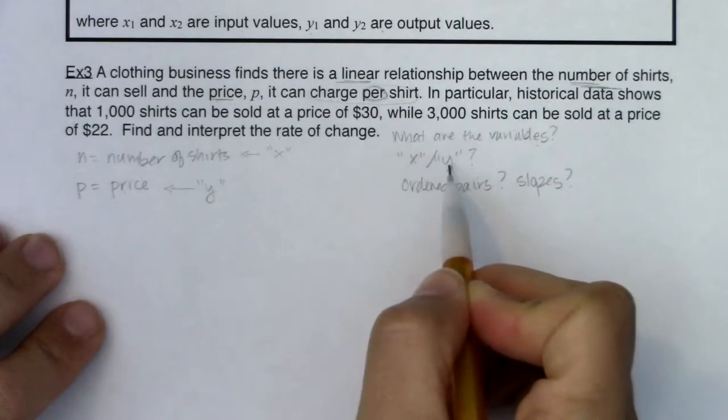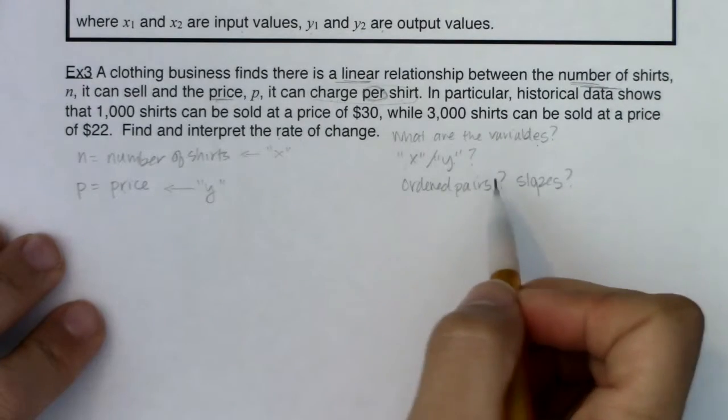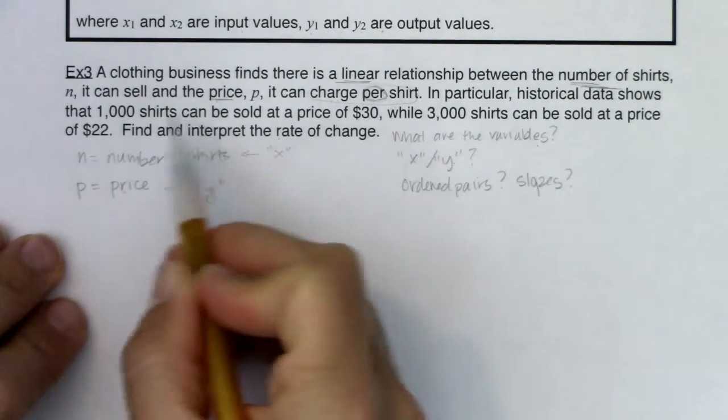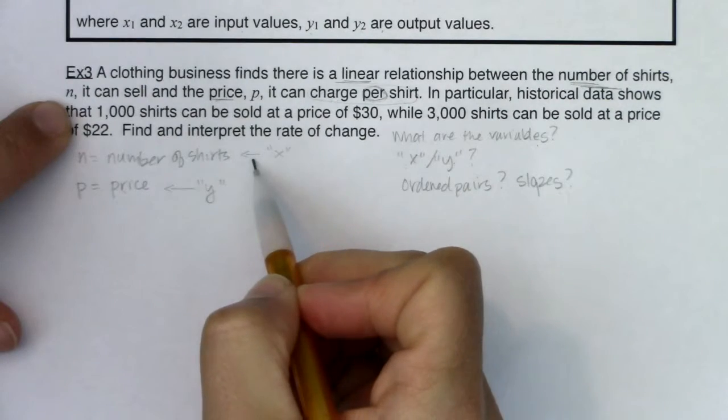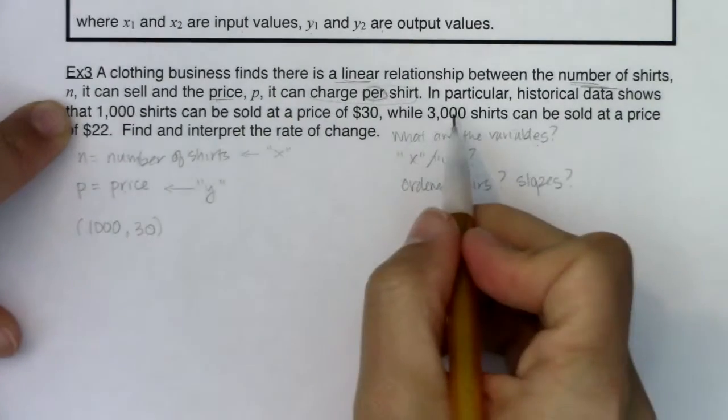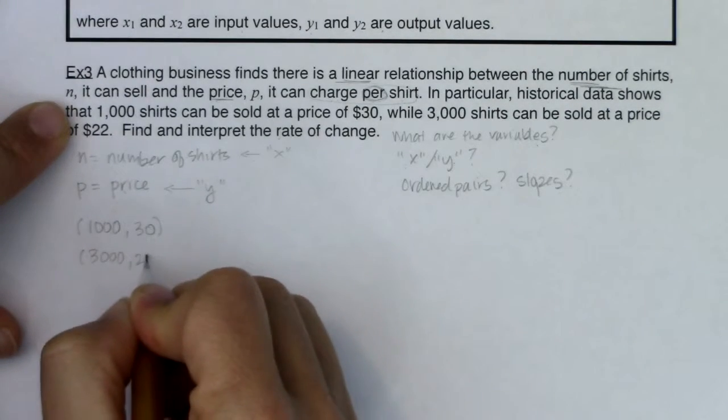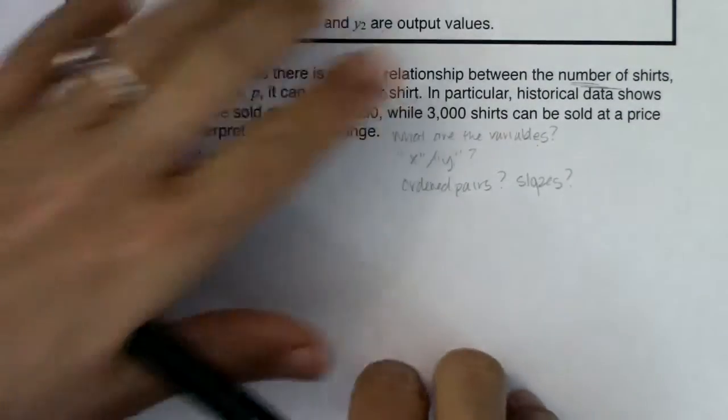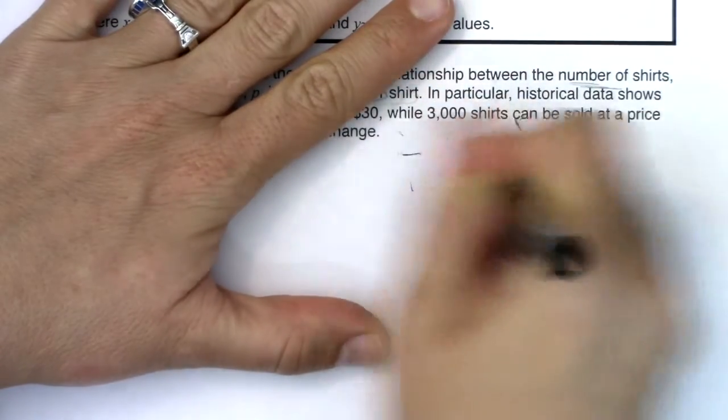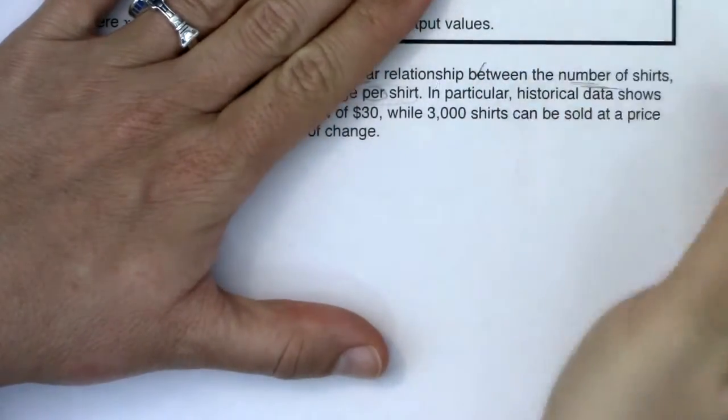Okay. So I figured out my two variables. I know what my X, I know what my Y is. And let's see if I was given ordered pairs or slopes or maybe one of each. So as I go through here, it says historical data shows that a thousand shirts can be sold at a price of $30. So I see an ordered pair. Shirts is an X value. $30 is a Y value. So I have a thousand and then I have 30. I also see this next one with 3,000 shirts and $22. All right. So with that, just to give myself some room, I'm going to erase this. All right. So we found the variables. We determined what the input and output was. And we, in this case, were given two ordered pairs.